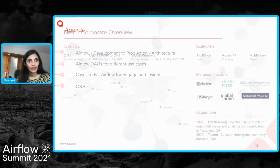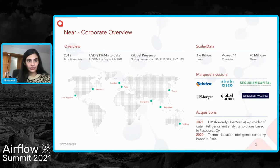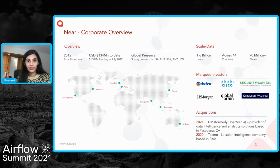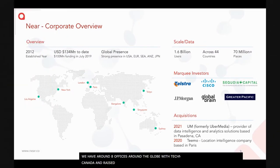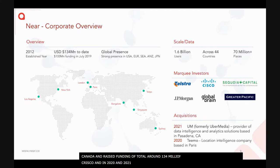To give a brief introduction about Near: it's a company incorporated in 2012 with a global presence in the USA, Europe, Southeast Asia, India, Japan, and New Zealand — around eight offices across the globe, with technology based mostly out of Bangalore. We've raised funding of around $134 million from Sequoia, JP Morgan, Cisco, and Telstra.